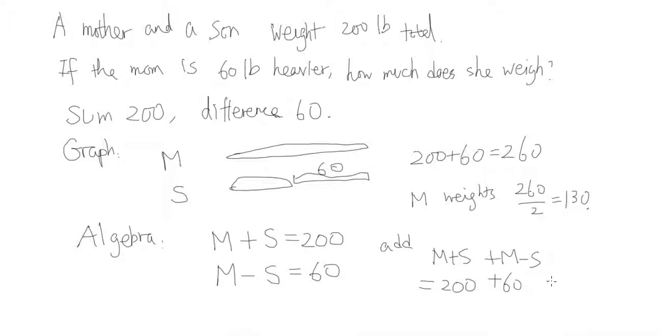When you add the left sides, you have plus S and minus S, which cancel out, leaving you with M + M. The right side gives you 260.